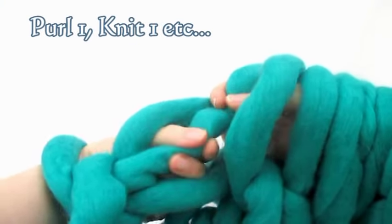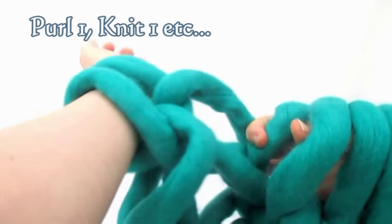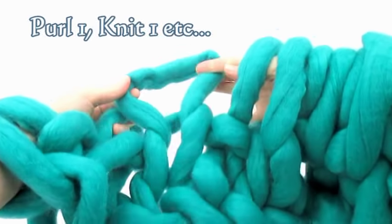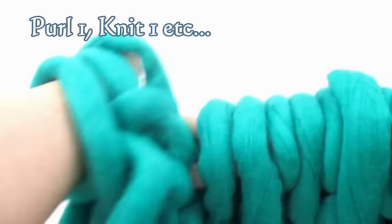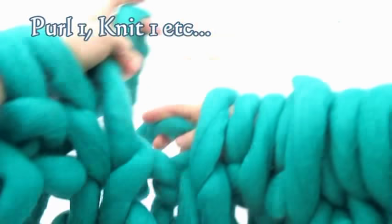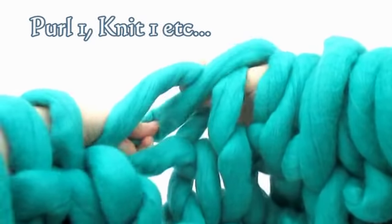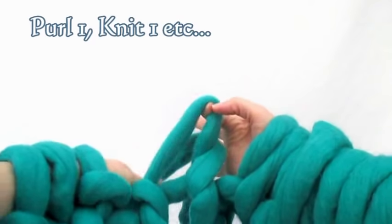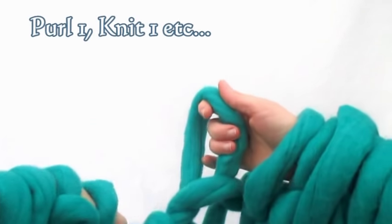This is a purl stitch, so we're going to purl it. The next one's a knit stitch, so we're going to be knitting it. And you follow the same pattern all the way through. Purl one, knit one, purl one, knit one, all the way to the end. If you get lost, just look at the stitch below what you're just going to knit, and see if it's a knit stitch or a purl stitch, and that will tell you where you need to be.